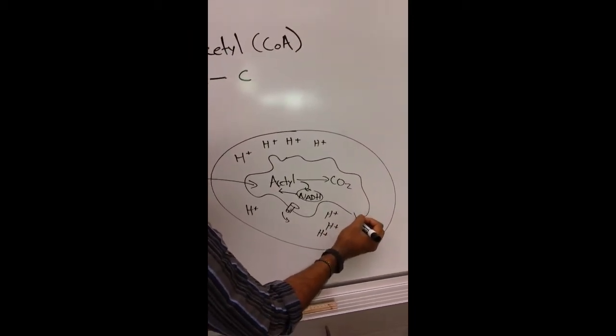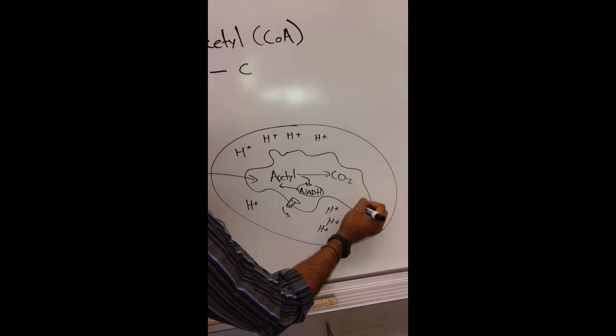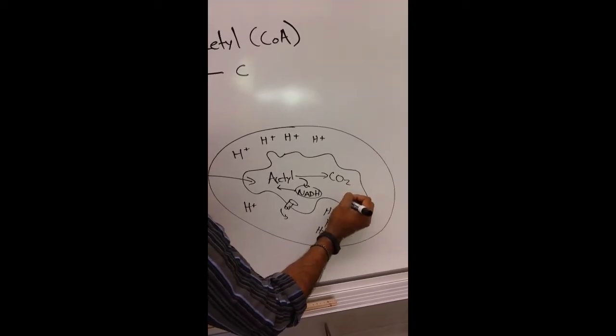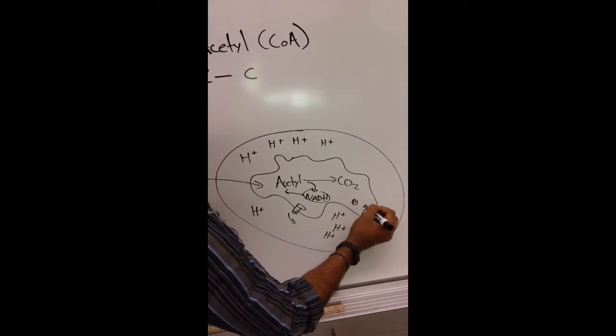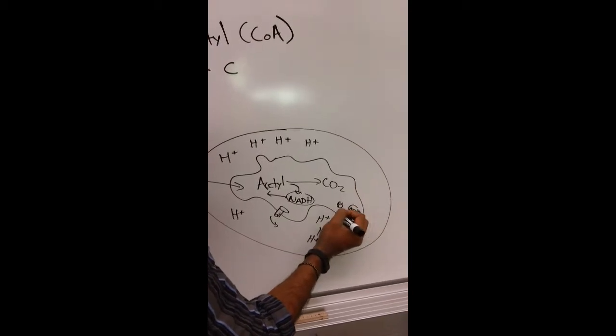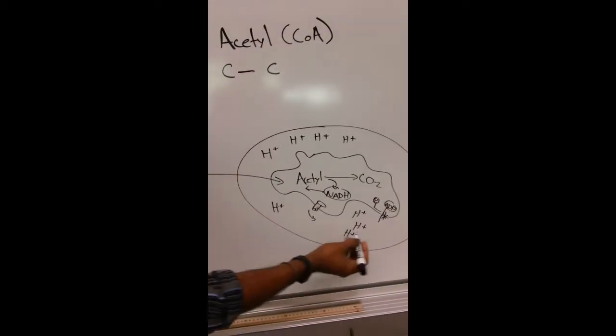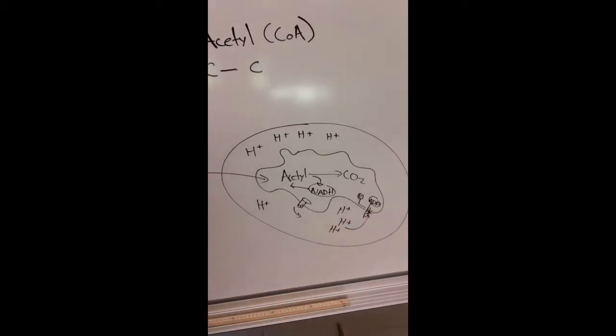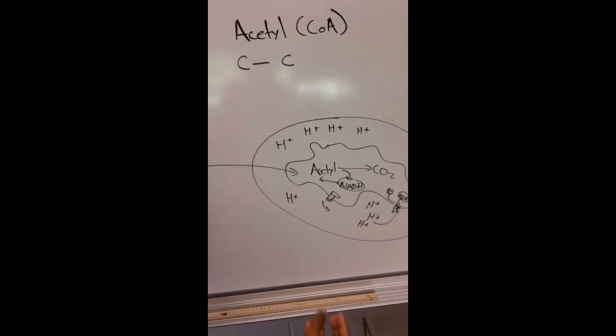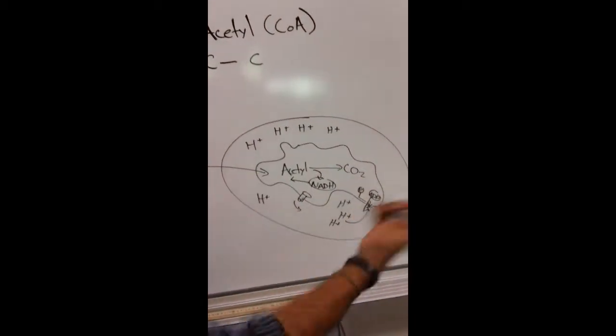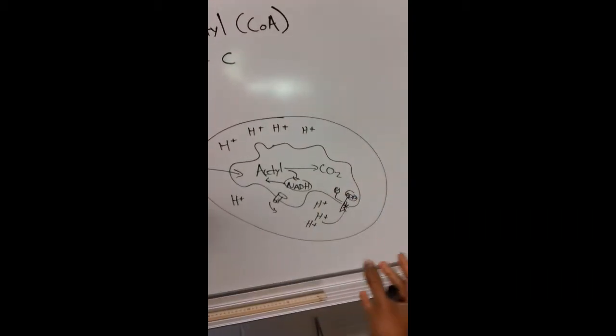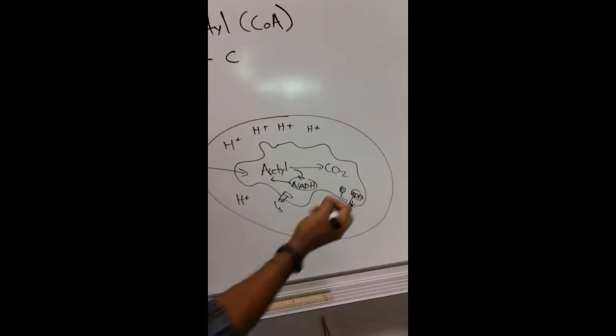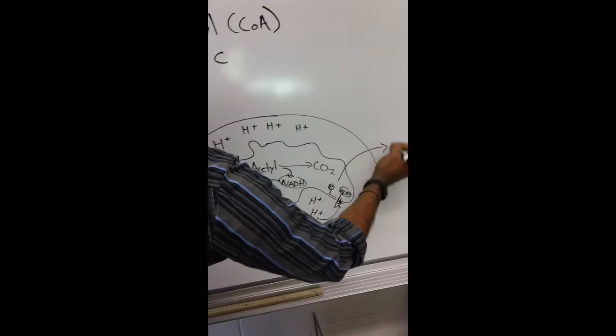I don't know how to do this. Windmill. H+ flow through a pinwheel in a molecule called ATP synthase. That pinwheel or turbine spins, forcing these two things together, ADP and phosphate, generating ATP.